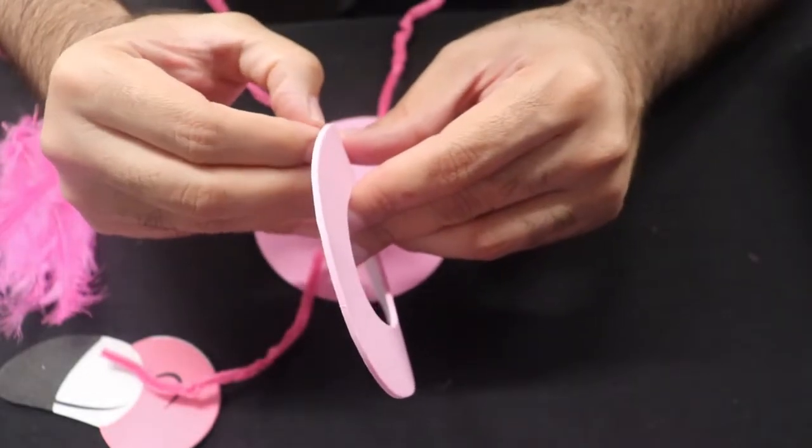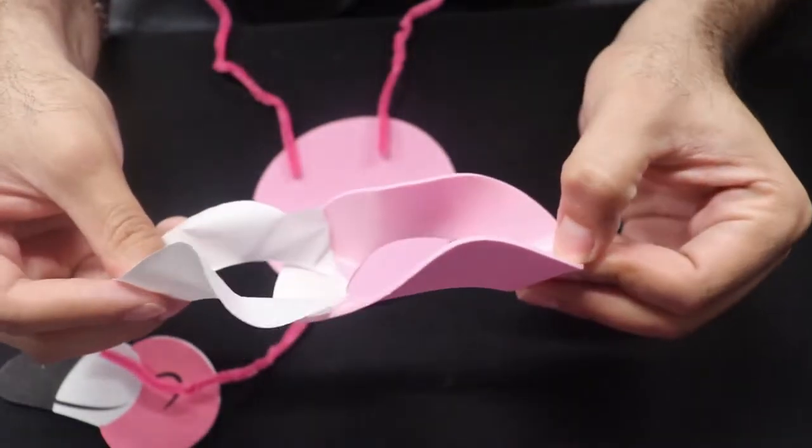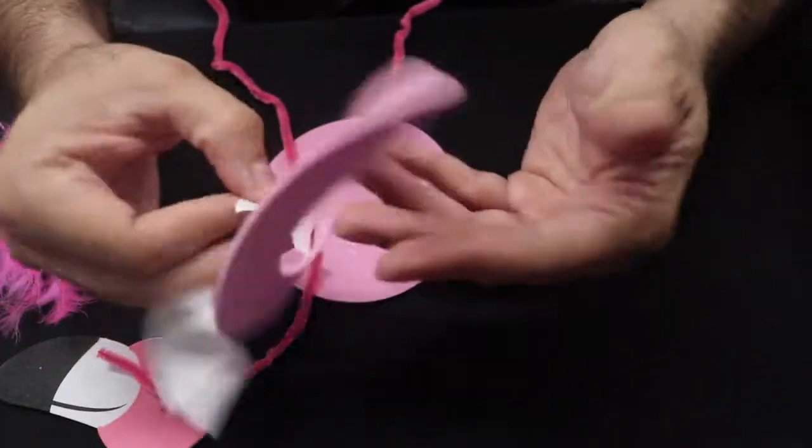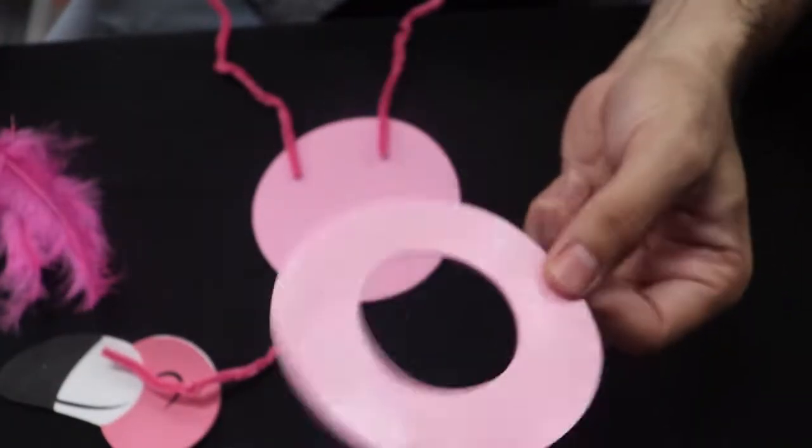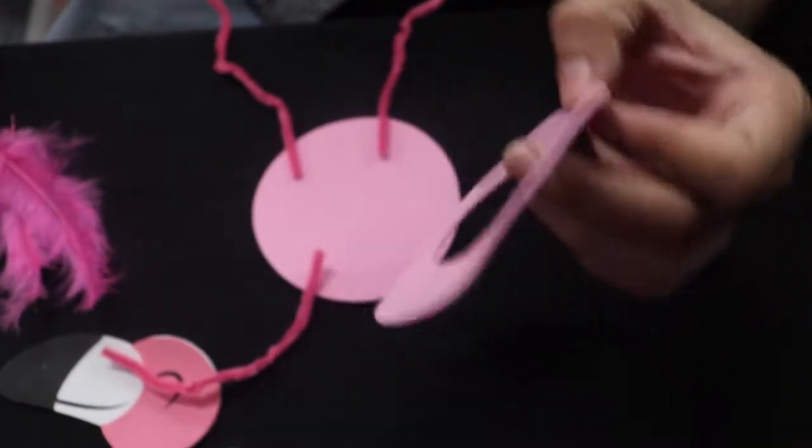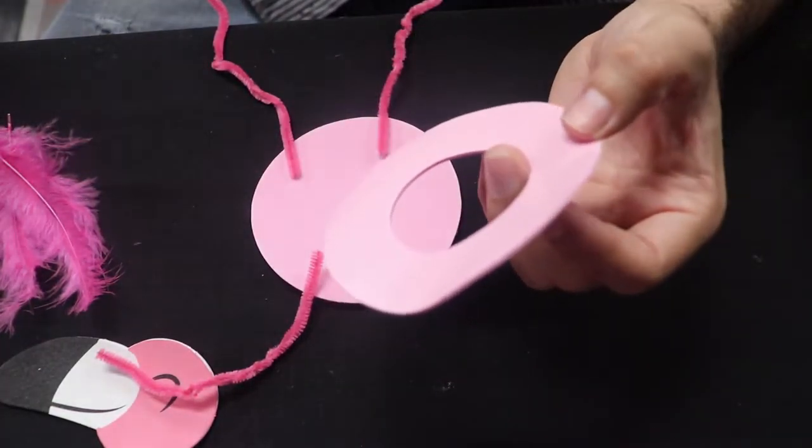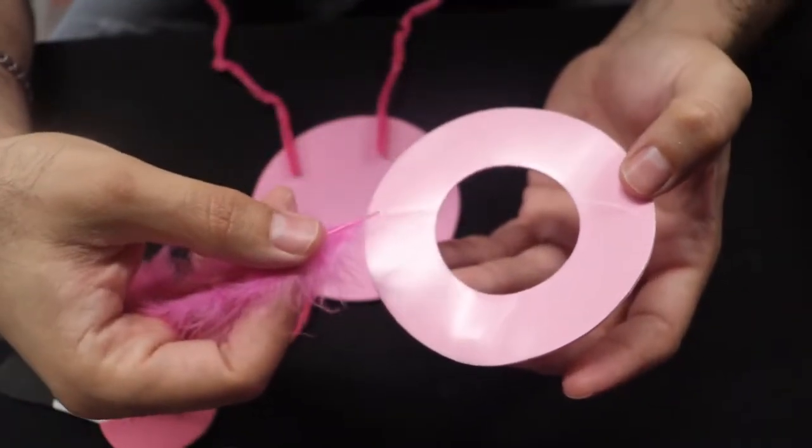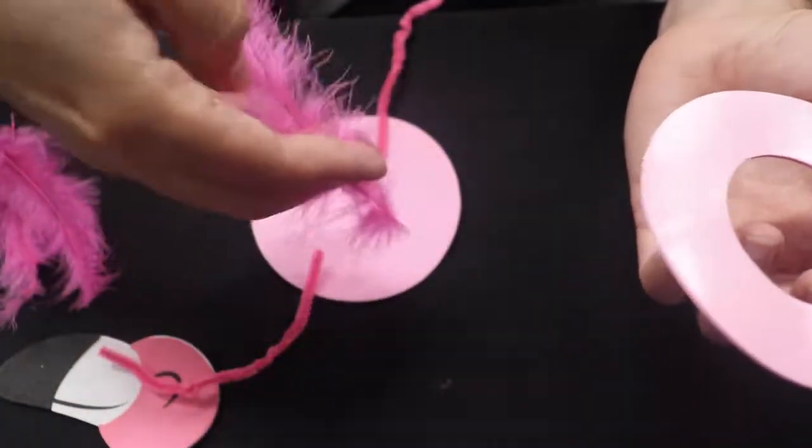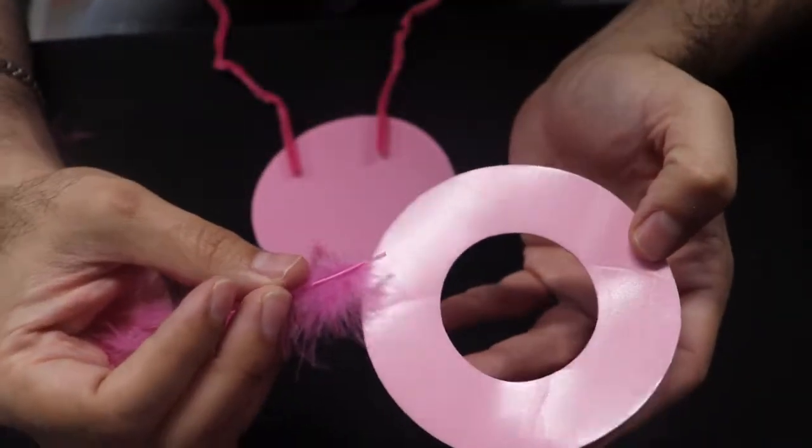Peel off the self-adhesive back. Just to make this a little bit easier on myself, I'm going to put the feathers on here. You don't have to do it. You could lay the feathers on the flamingo first and then put your self-adhesive back. I just want to do it this way.